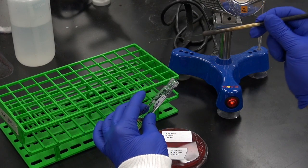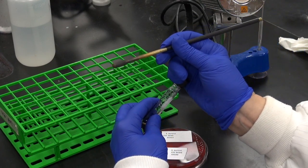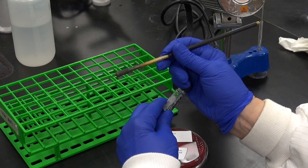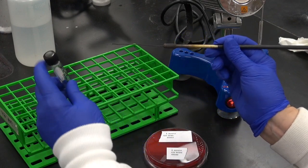Remove the loop from the broth, replace the cap, and place the tube in your rack.